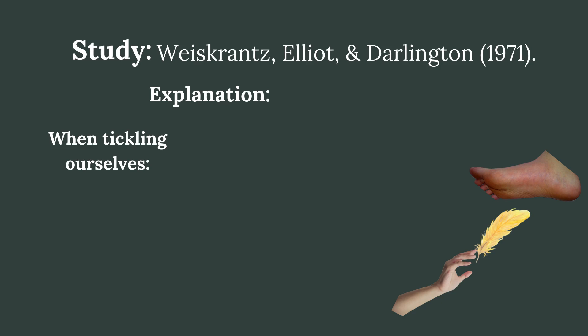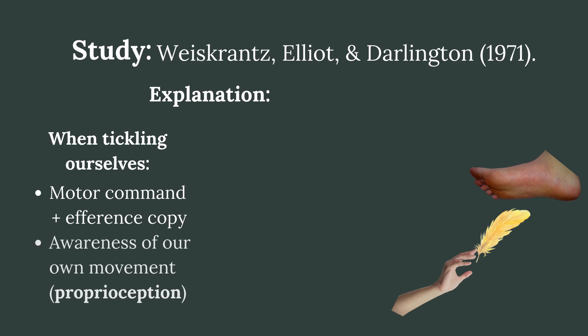The explanation for these results is that when we tickle ourselves, as previously discussed, we produce an efference copy alongside our motor command. However, we also have an awareness of the fact that we are the ones moving our own hand to tickle ourselves. We are able to have this awareness because of something called proprioception — our sense of being aware of our movement, action, and location in space. When we tickle ourselves, not only is there an efference copy generating predictions about incoming sensations, but we are also simultaneously aware that we are the ones generating those sensations. It is this awareness alongside the efference copy that together weaken the sensory stimulation of the tickling.